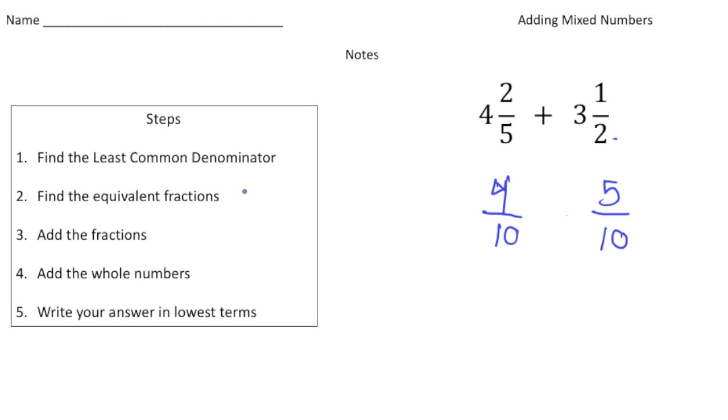Now I've jumped over to step three. I need to add these fractions. So four tenths and five tenths adds up to nine tenths. I just found the sum of the fractions of one half and two fifths. Now I need to add the whole numbers. The whole numbers in this case are four and three, so four and three add up to seven.